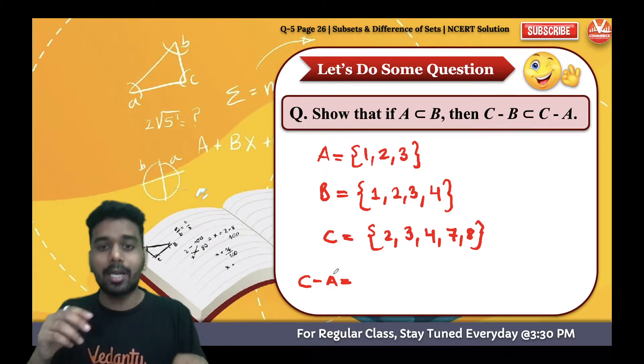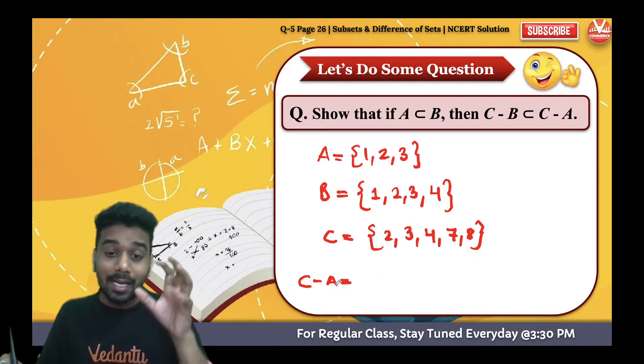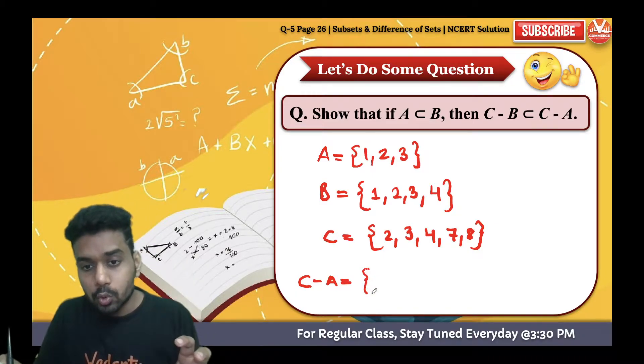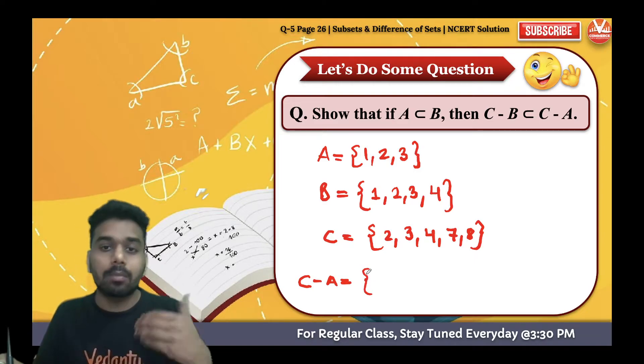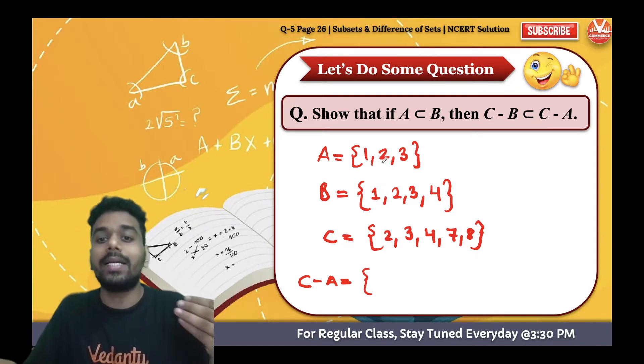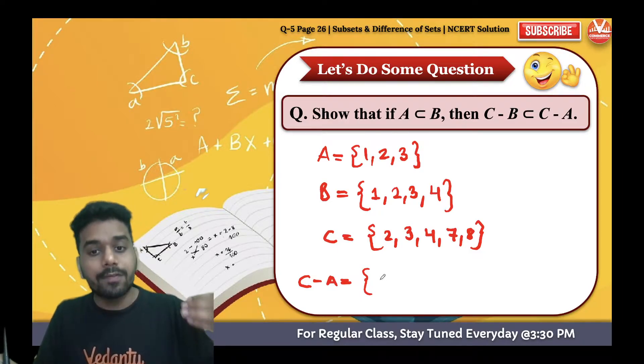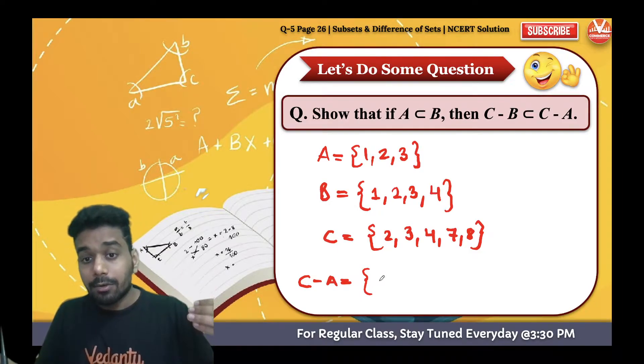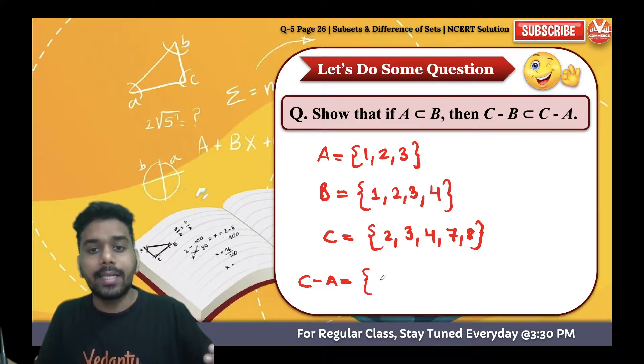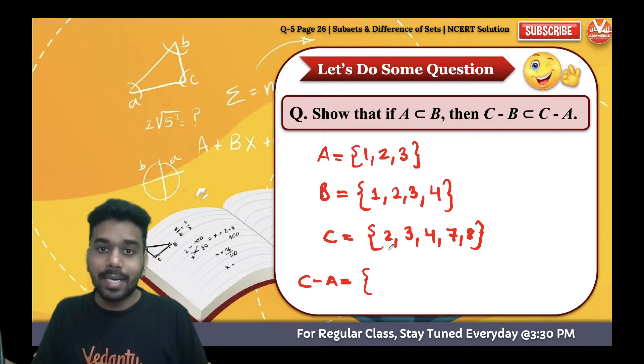C minus A means remove all the elements from C which is also present in A. I repeat, C minus A means remove all the elements from C which is also present in A. So 2 present in A, eliminate this. 3 present in A, eliminate this.